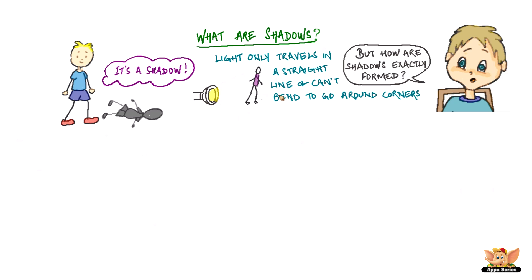Light only travels in a straight line and can't bend to go around corners. If it hits a solid object, it can't bend around behind the object to light up the area behind it.